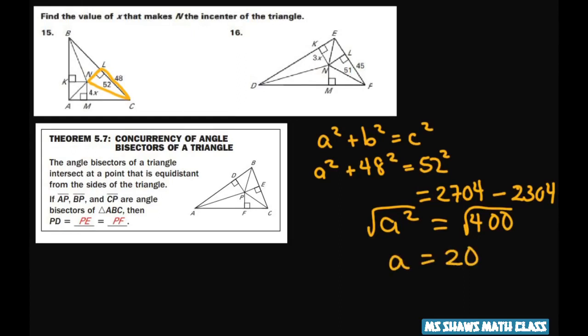Now, if this is 20, then this side is going to be 20. So you set 4x equals 20. Divide both sides by 4 and you get x equals 5. And that's how you do that.